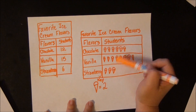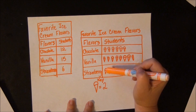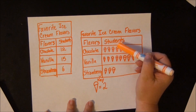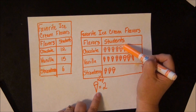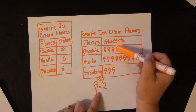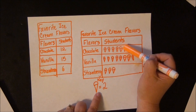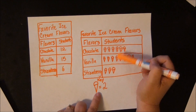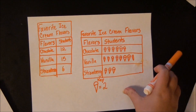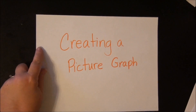For chocolate and strawberry: each cone is worth 2, so 2, 4, 6 — 6 more students like chocolate than strawberry. Or you can say 6 fewer students like strawberry than chocolate. And that is how you create a picture graph.